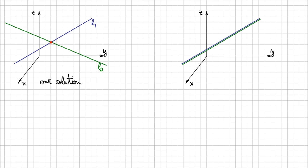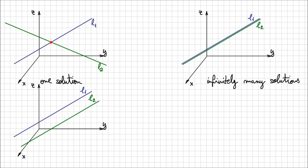If the lines are coincident, the system of equations is going to have infinitely many solutions, just like before. And if the lines are parallel, they have no point in common, so the system of equations is going to have no solution. These three situations are just like in two-space — regardless of the extra z component in the vector equations, you solve them the same way: one solution for intersection, infinitely many for coincident lines, or no solution for parallel lines.